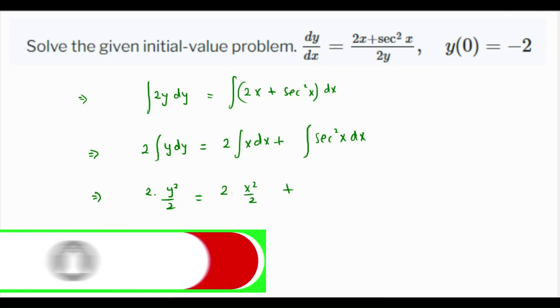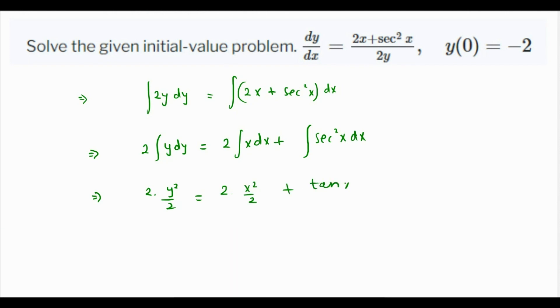The integration of y is y square over 2, integration of x is x square over 2, and integration of sec square x is tan x plus c. This 2 and 2 is cancelled, so we have y square is equal to x square plus tan x plus c.